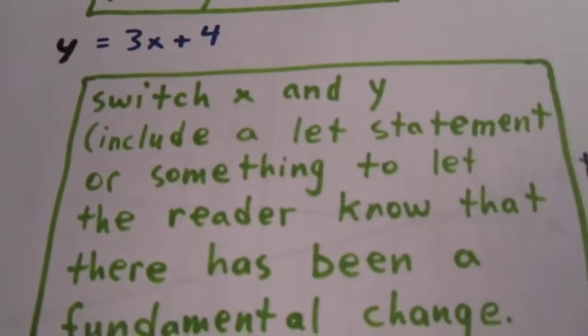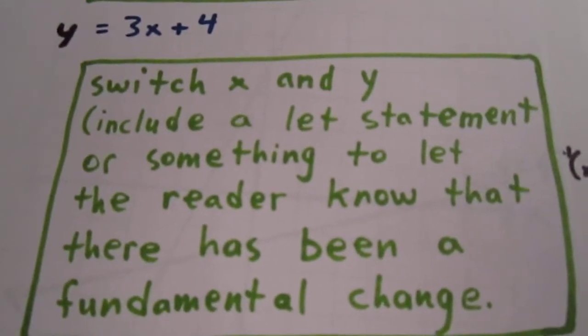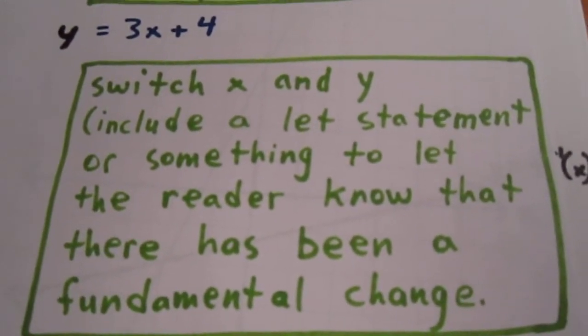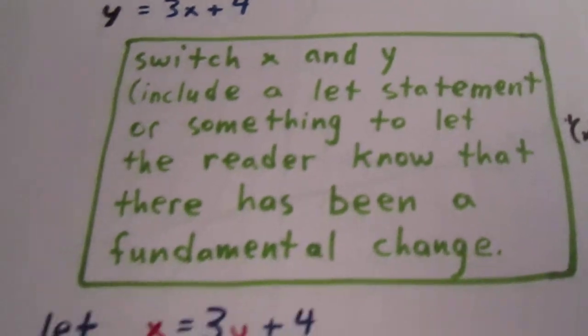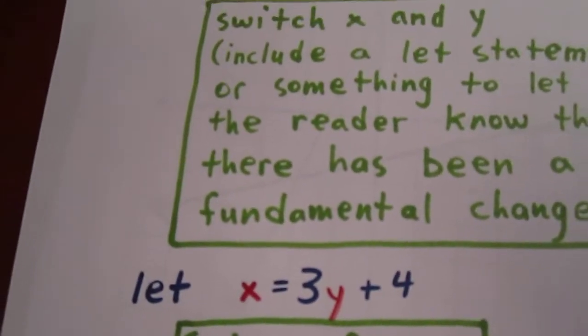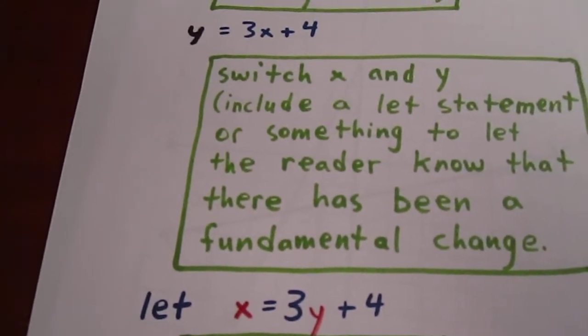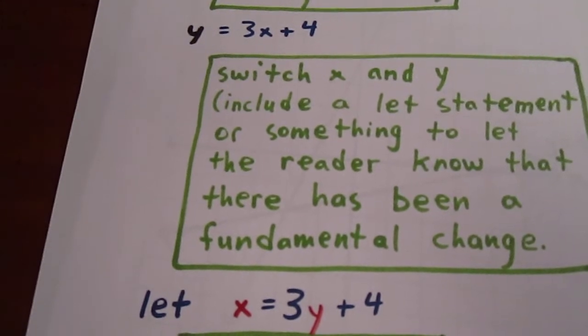And now we switch x and y, and we should include a let statement or something to let the reader know there's been a fundamental change. So we say let x equal 3y plus 4. See, what we did there is we just switched the x and y variables.